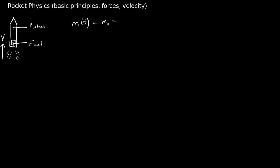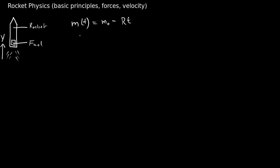Then we subtract r times t, where r is dm over dt — the change in mass over time. This is analogous to the equation s equals v times t, where velocity is dx over dt multiplied by t. Here it's dm over dt multiplied by t: the mass the system has lost after a particular period of time. We subtract that from the initial mass, and that gives us the mass at a particular time.